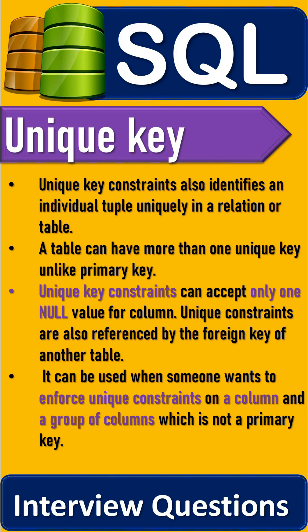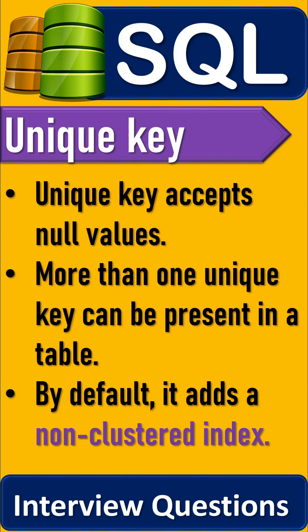A unique key can be used when someone wants to enforce unique constraints on a column or a group of columns which is not a primary key. More than one unique key can be present in a table. By default, it adds a non-clustered index.